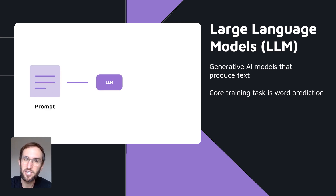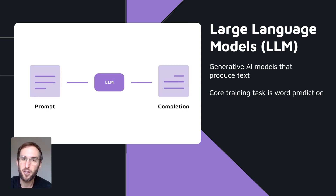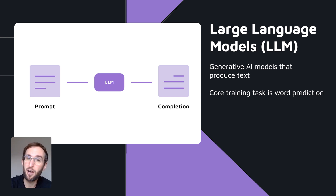To get an LLM to generate text, all you have to do is give it a text input, which is often referred to as a prompt, as it's what prompts the model on what to output.